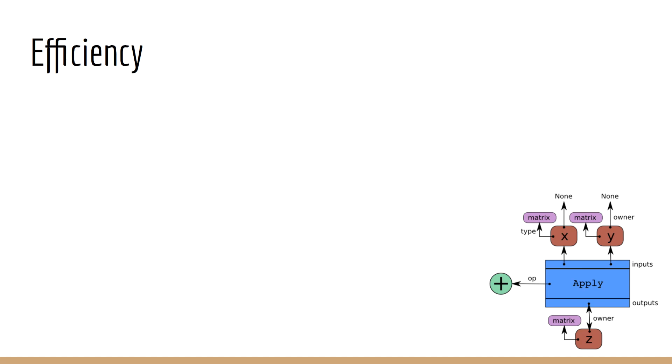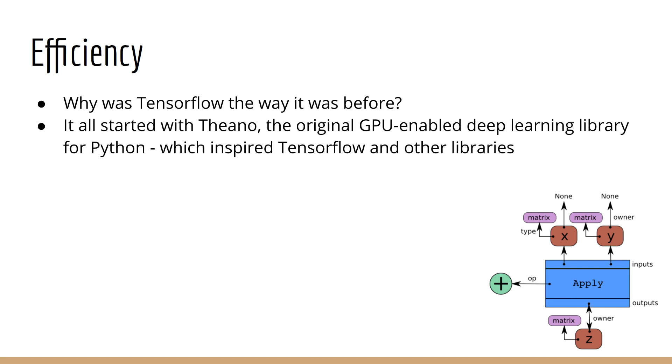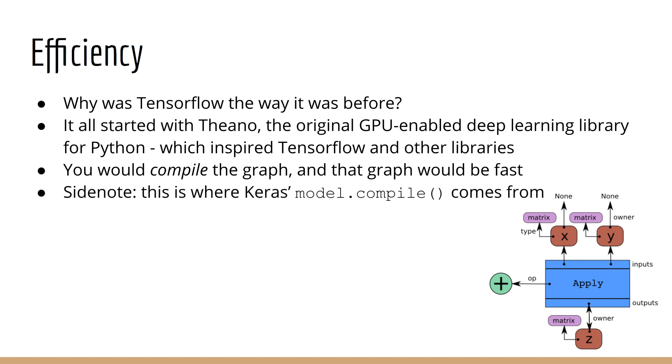Now we have to wonder, was there a reason for TensorFlow to be implemented the way it was in the first place? Why would you want to build a computation graph and only pass values to it later on? The answer is that this actually all started with Theano, the very first GPU-enabled deep learning library for Python, which inspired TensorFlow and other deep learning libraries as well. The idea was, you would compile this graph, and that compiled graph would be very fast. As a side note, this was what Keras was doing when you called model.compile. So if you had a Theano backend, it was actually compiling the Theano graph under the hood.